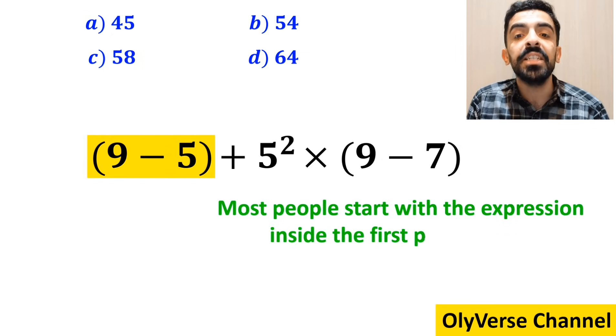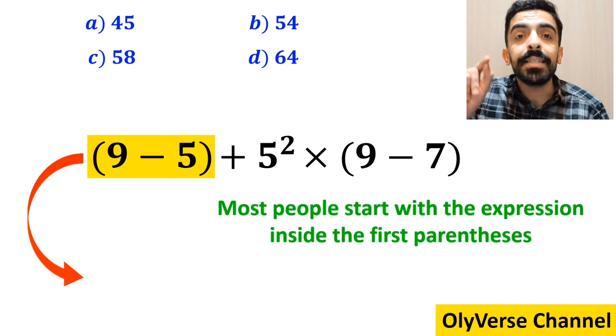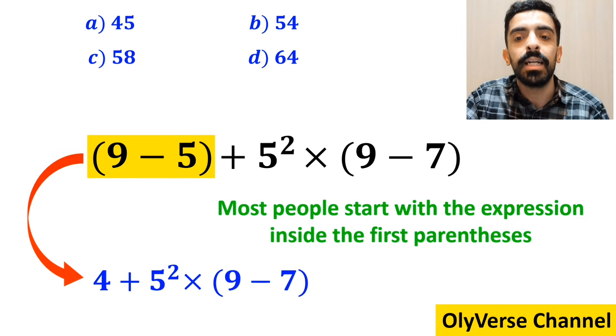Most people start with the expression in the first parenthesis and simplify this expression to 4 + 5² multiplied by (9 - 7).